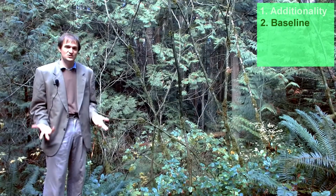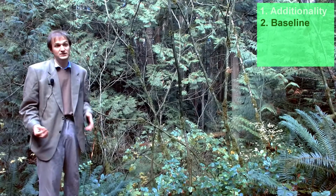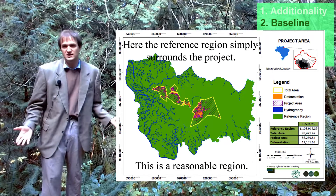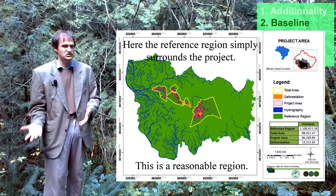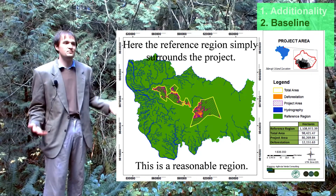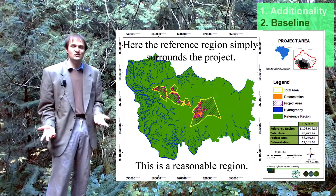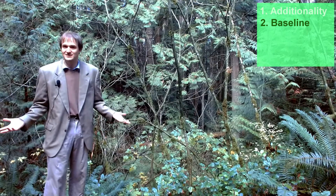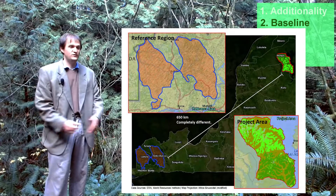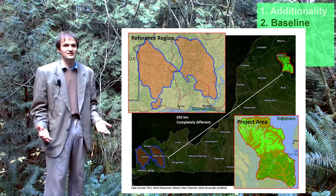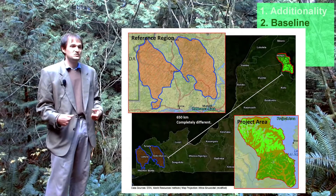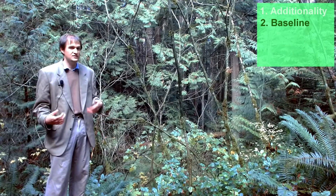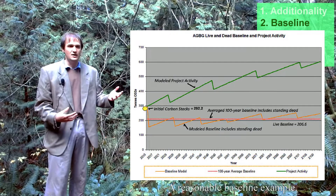For avoided deforestation, baselines are usually calculated using a reference region — a region outside the project that's supposed to be similar to it. They'll see what happened to that region over the last 10 years and say that's a likely outcome for the project. This is fine as long as the reference region is actually similar, but unfortunately I've seen reference regions that are a thousand kilometers away, with completely different population dynamics and protective status. Reference regions are a way that people can easily manipulate the system.